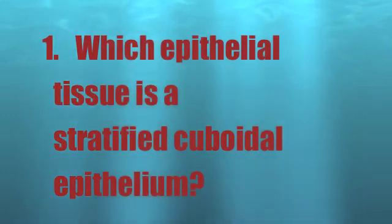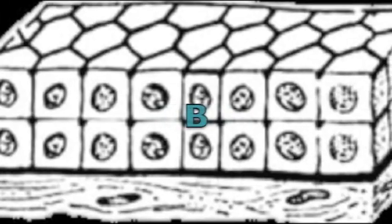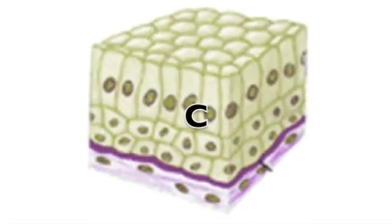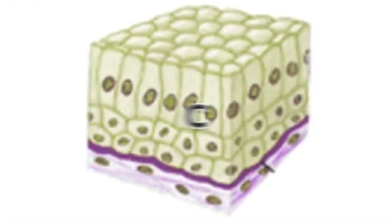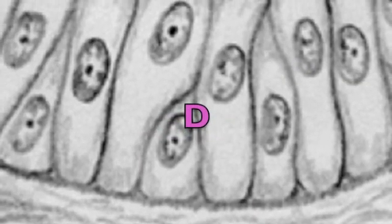Question 1. Which epithelial tissue is a stratified cuboidal epithelium? A, B, C, or D?